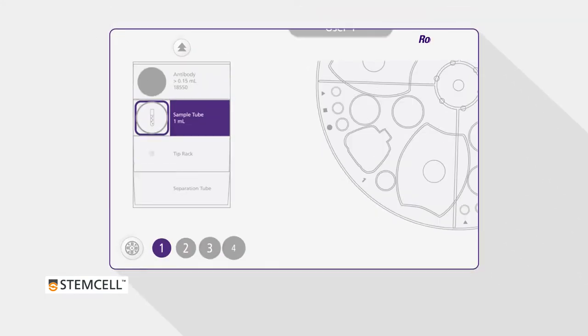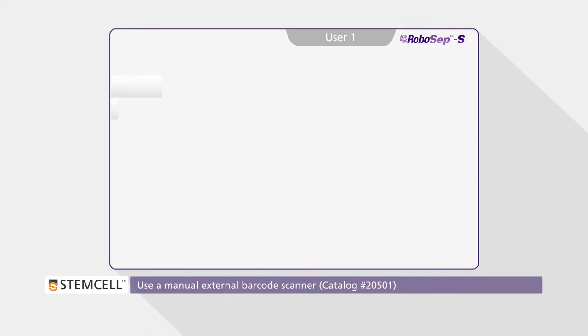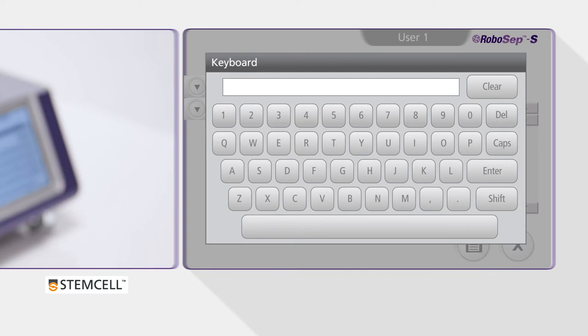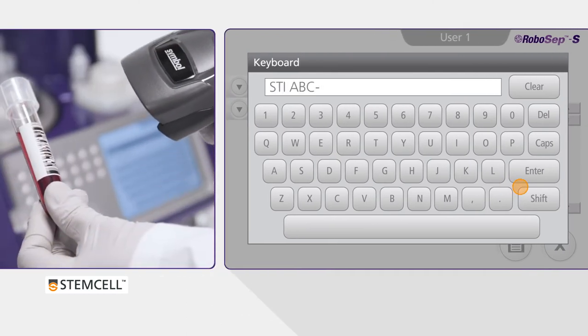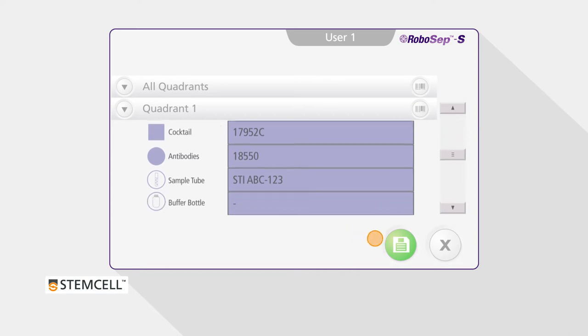If sample tubes are labeled with barcodes, these can be scanned using a manual external barcode scanner. Click on the Sample ID box for the sample tube. Once selected, scanning the barcode with the manual barcode scanner will allow you to record sample-specific information. The same process can be repeated for the buffer bottle as well.